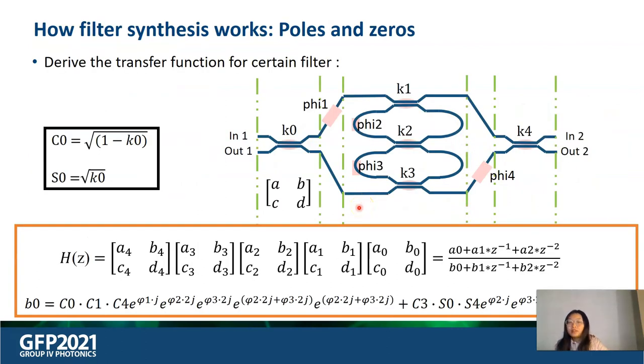Now let's see how the filter synthesis works. We can describe the transmission of the filter from the input ports to the output ports using a 2x2 transfer matrix. The transfer matrix can be calculated by multiplying the transfer function of each segment in the circuit: the input coupler, the double ring, and the output coupler.